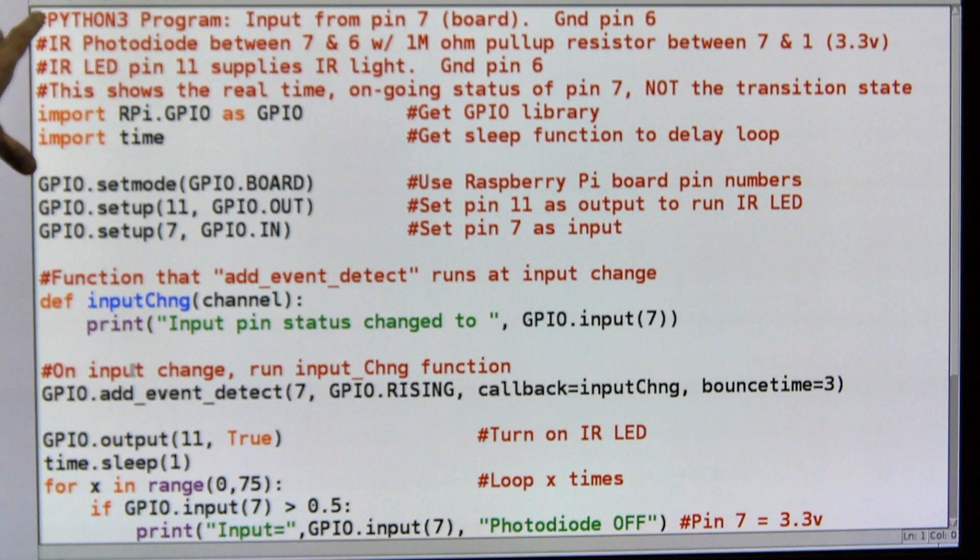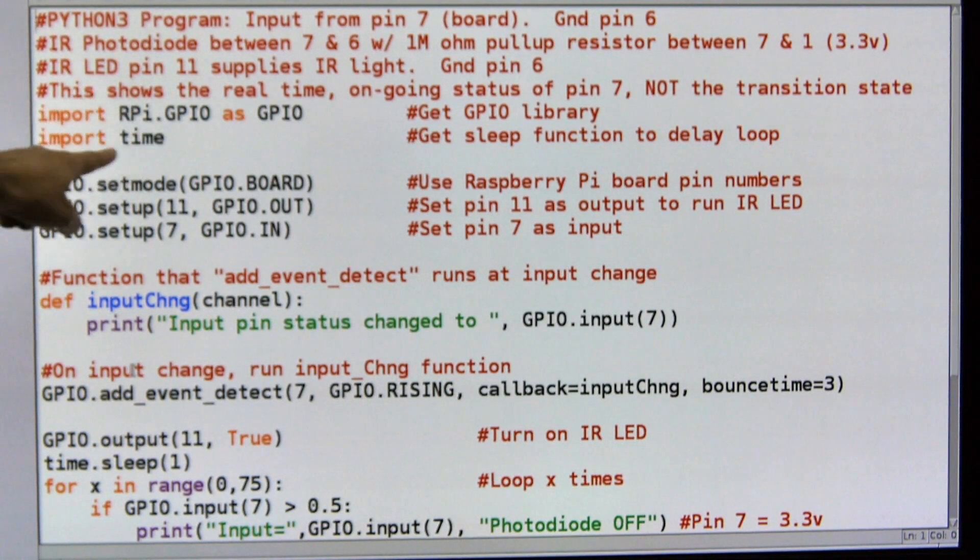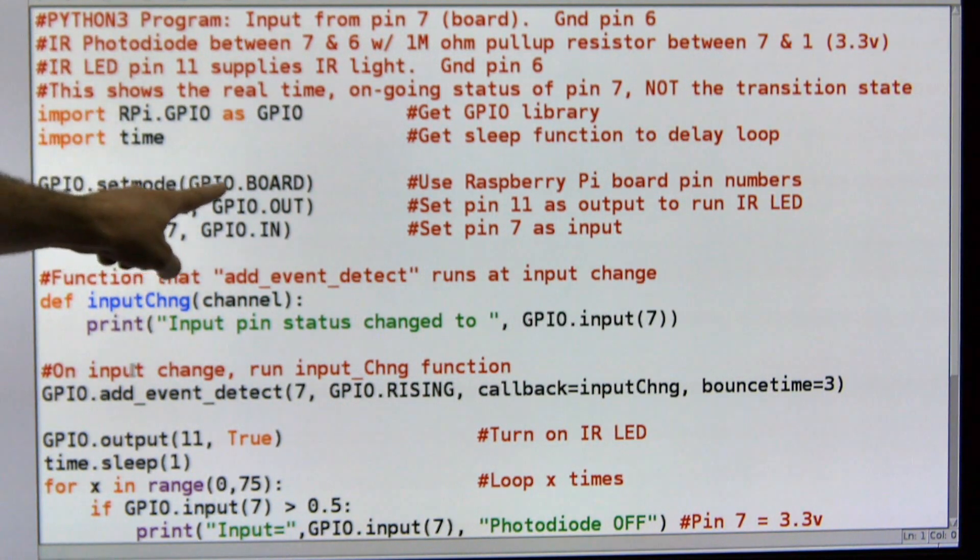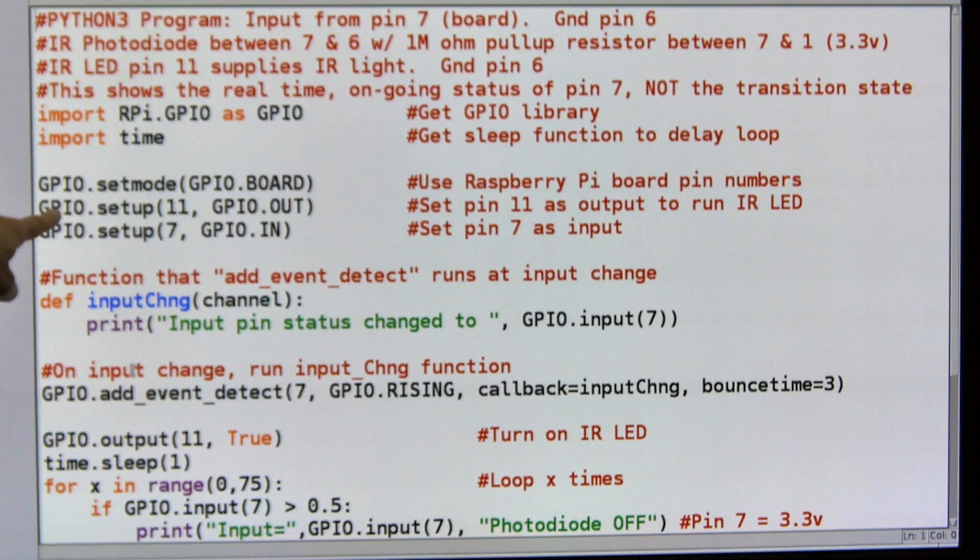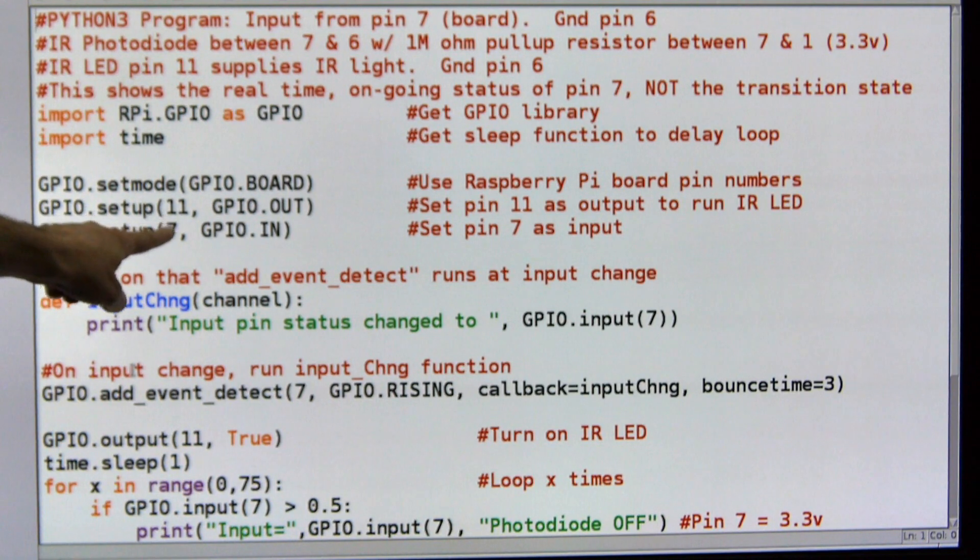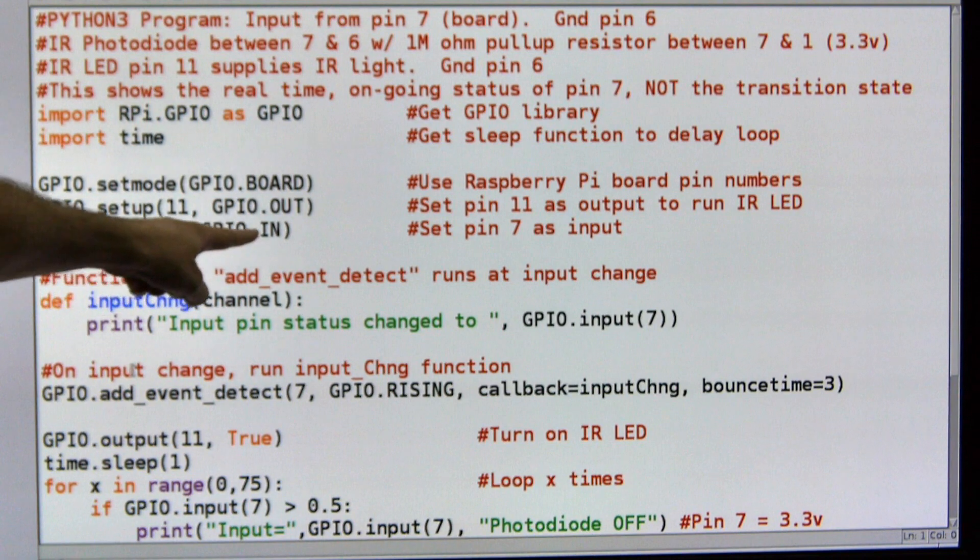The first part of the program is very similar to the last one. I'm not going to go over it in great detail because we've already done that once before. I'm using Python 3 this time around just because it's a little newer version. I'm importing the GPIO library and the time library. I'm setting up the GPIO as board numbering.